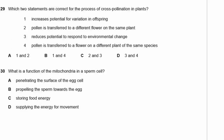Question 29: Which two statements are correct for cross pollination in plants? Cross pollination is sexual reproduction and produces variation. Pollen is transferred to a flower on a different plant of the same species — yes. It doesn't reduce potential to respond to environmental change — that's for asexual reproduction. The answer is statements 1 and 4, so B.